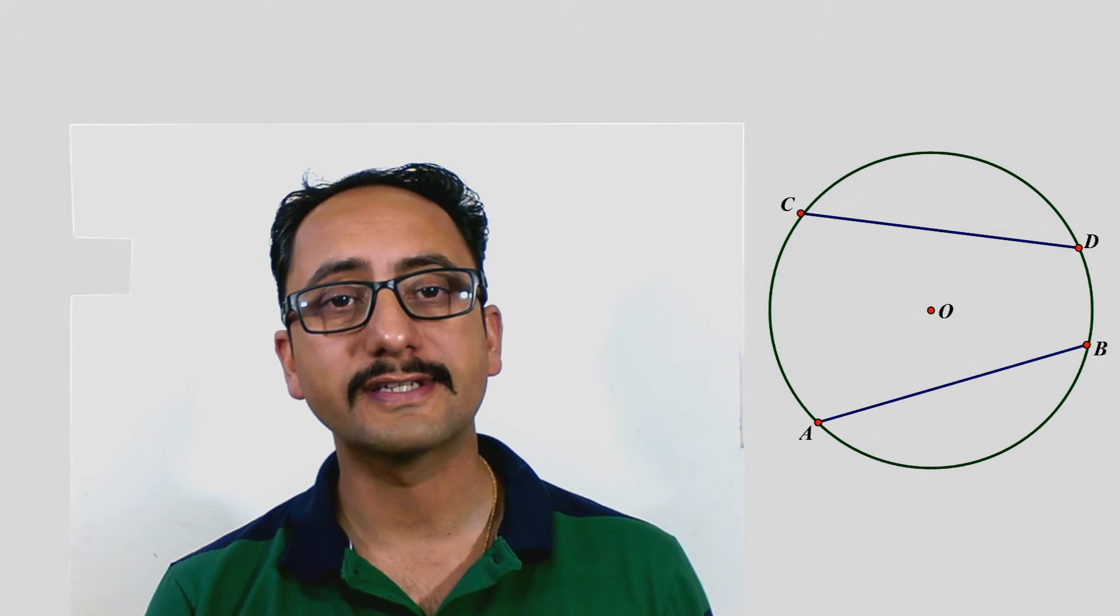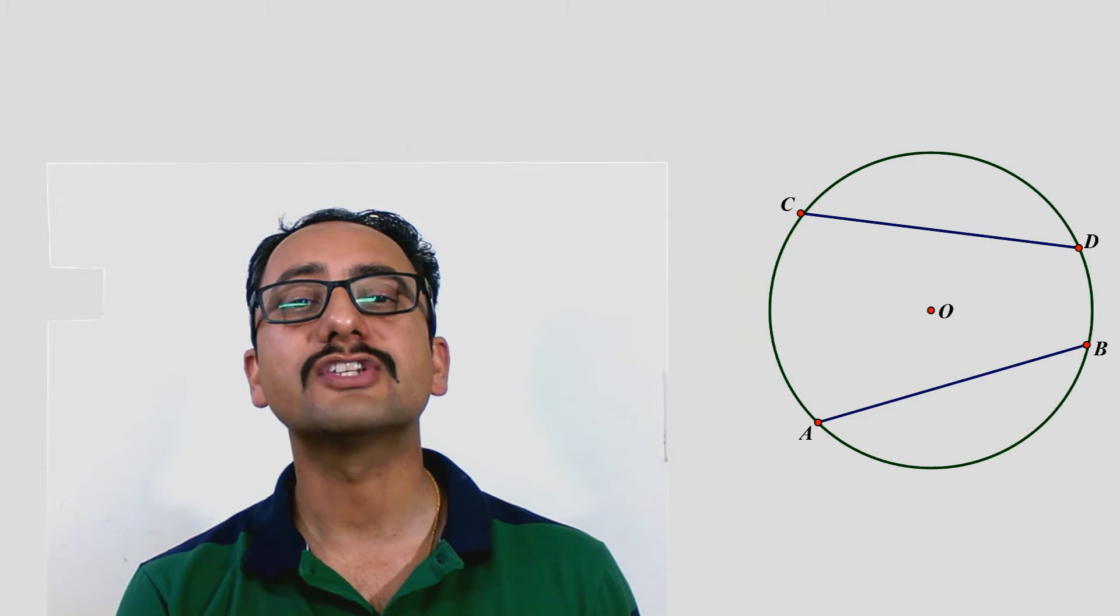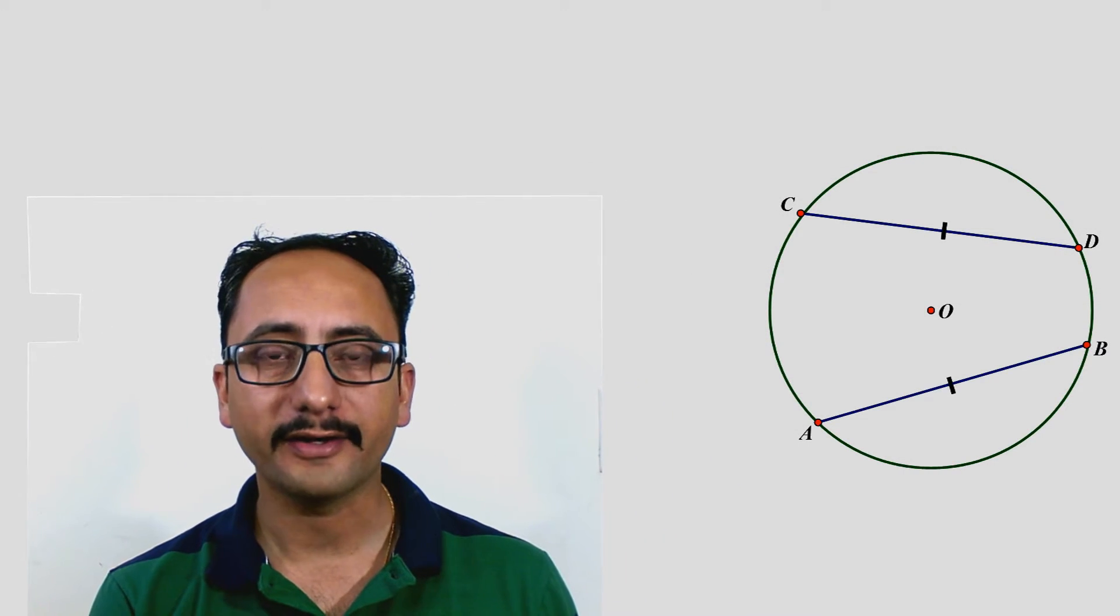The theorem states that angles subtended by equal chords of a circle at the center are equal. If we have a circle with center O and there are two chords AB and CD such that both the chords are equal in length.